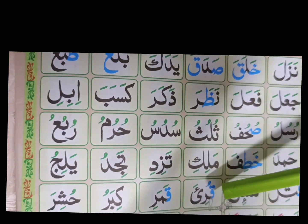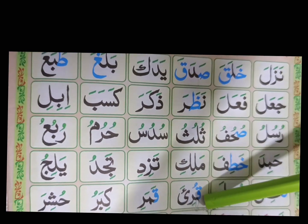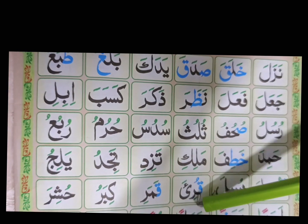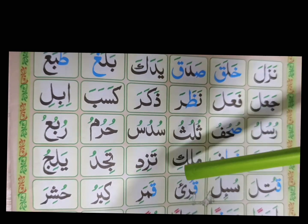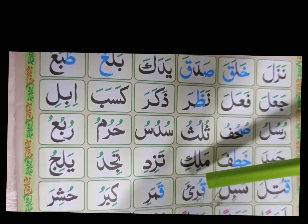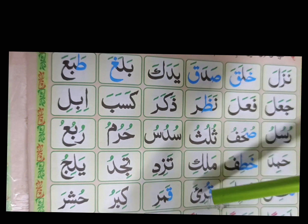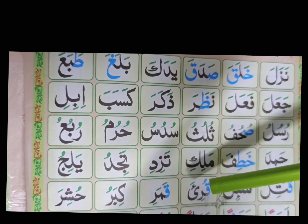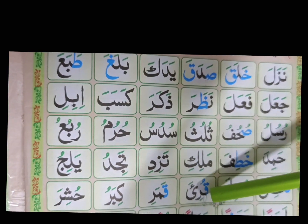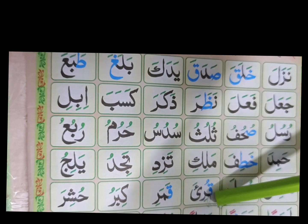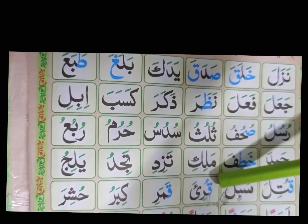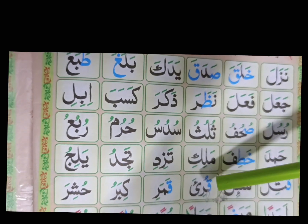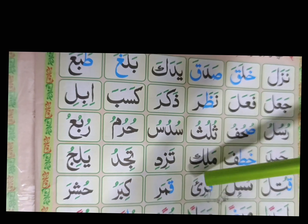Qaf, damma — qu. Ro, kasra — ri. Quri. Hamza, fatha — a. Quri'a. Ro کے نیچے کسرہ ہے۔ جب Ro کے نیچے کسرہ اور کسرہ تنوین ہو تو Ro کو ہمیشہ باریک پڑھتے ہیں، یعنی thin tone میں پڑھتے ہیں۔ Quriya. (Ro has kasra below. When ro has kasra or kasra tanwin, ro is always read thin/light. Quriya.)